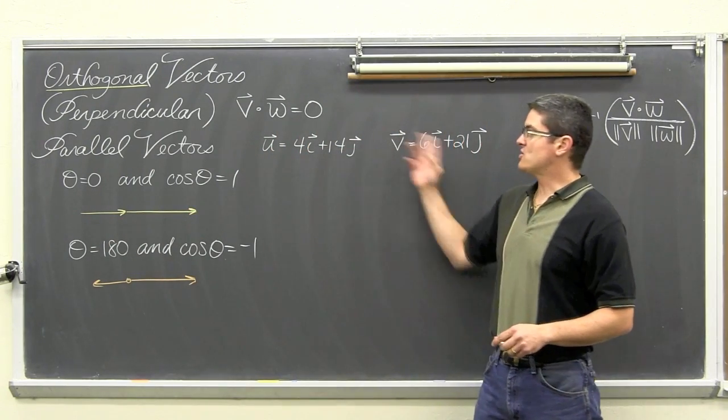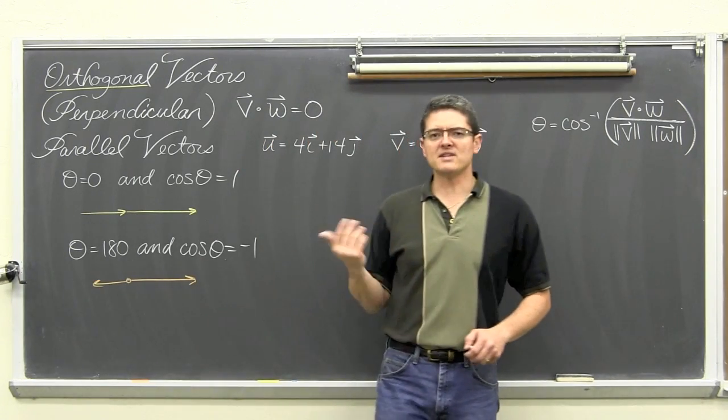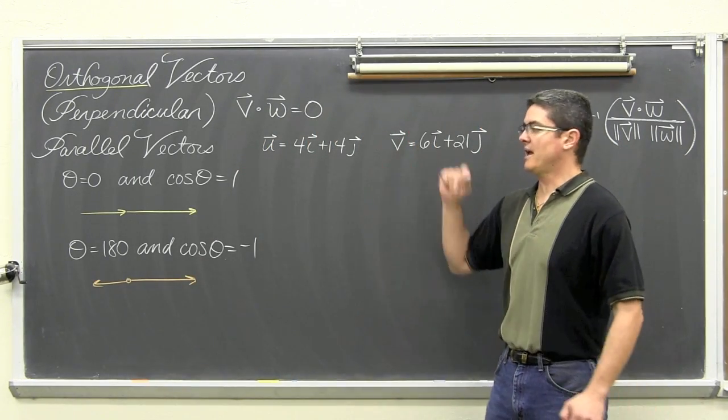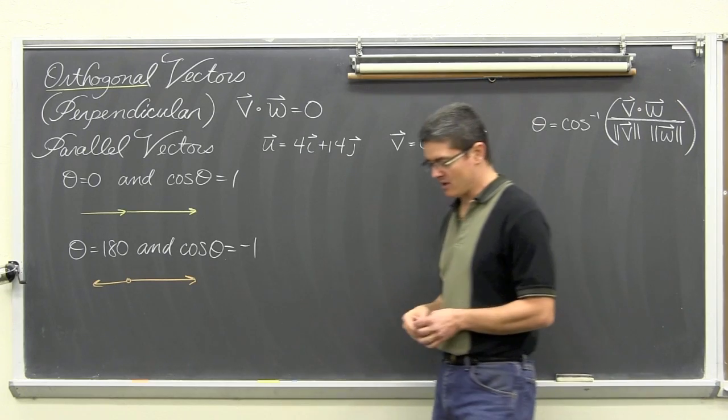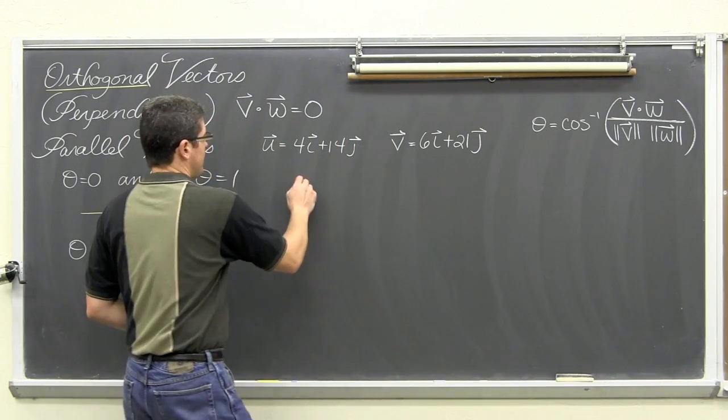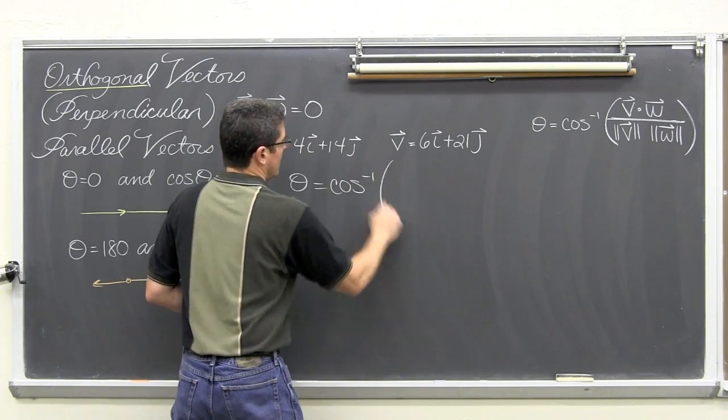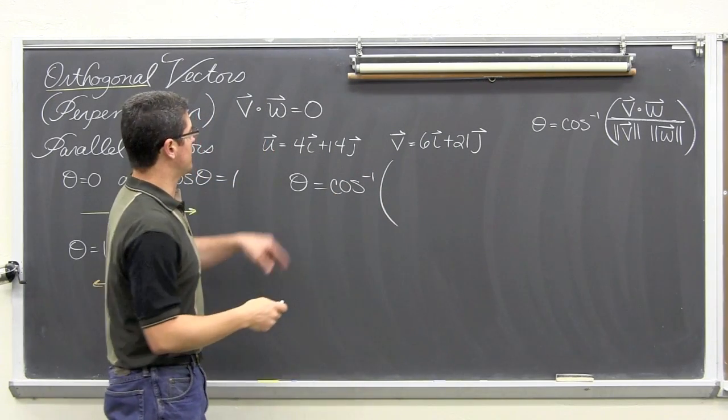If my signs had changed, then I would have parallel vectors but going in opposite directions. Well, that is all fine and dandy, but what if you can't just glance at it and see that there are scalar multiples of each other? You apply the formula. So, we have theta is equal to, once again, the inverse cosine of the dot product between the two vectors.